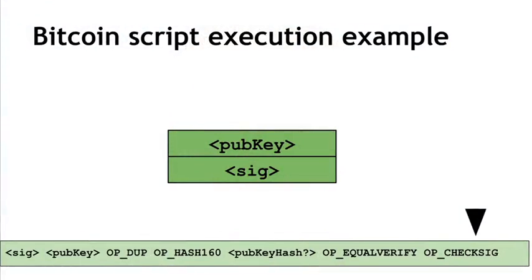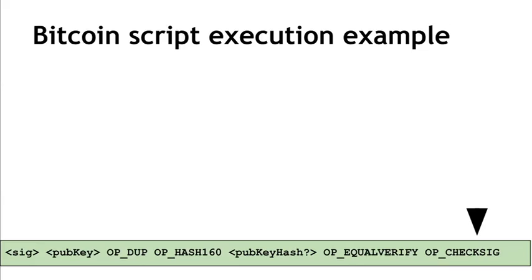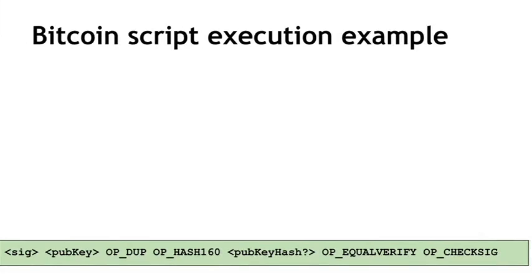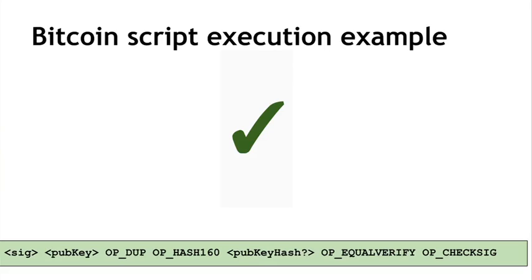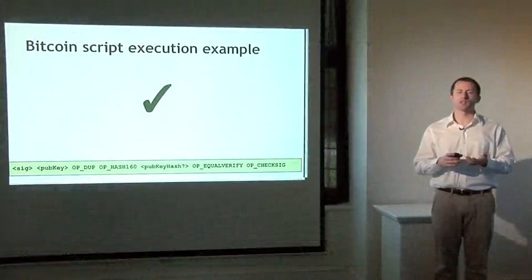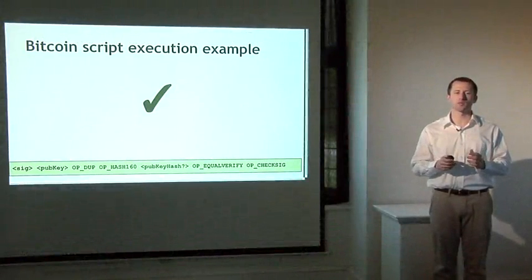There's only one thing you can sign in Bitcoin, which is an entire transaction. So the CHECKSIG instruction verifies that the entire transaction was successfully signed. It pops the remaining two items off the stack and checks that the signature is valid. Every Bitcoin script can only produce two outcomes: it either executes successfully with no errors — in which case the transaction is valid — or if there's any error while the script is executing, the whole transaction is invalid and shouldn't be accepted into the blockchain.